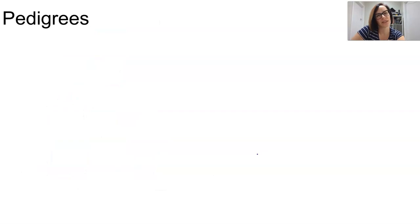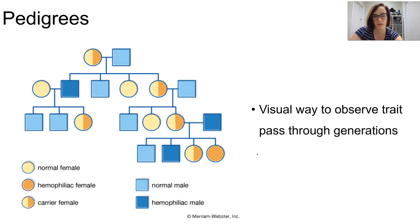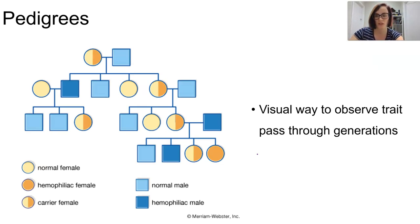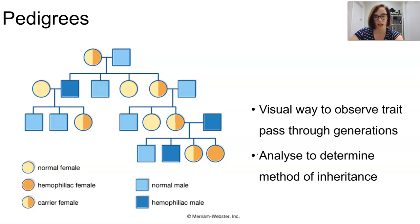Now we're going to have a little bit of an interlude about pedigrees. A pedigree chart is a visual method of observing a trait passing through generations of a family. And once you observe enough generations and phenotypes, you can actually analyse the method of inheritance as this trait moves through the family. This is the easiest way to investigate inheritance modes in humans, because we can't just casually force a genetic cross.